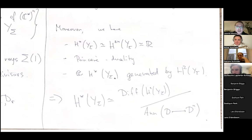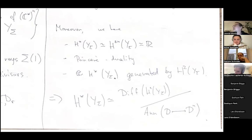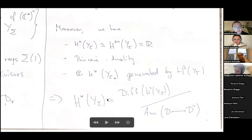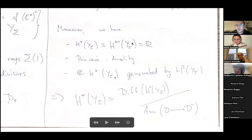Regarding the link with the Chow ring: toric varieties over C are smooth manifolds, so singular cohomology is well-defined. For toric varieties, the Chow ring equals the cohomology ring up to a grading shift, because toric varieties have an algebraic cell decomposition. More generally, any algebraic variety with a torus action and finitely many fixed points has this property, so one can use A (Chow ring) everywhere in place of H (cohomology).